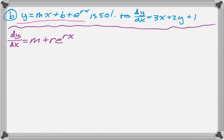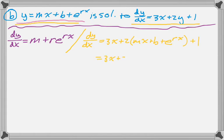So the derivative of mx is m, the derivative of b is 0, and then r e to the rx. The next thing I'm going to do is take that y and substitute it into the dy dx that I was given. So now I get 3x plus 2 times this y value, and then plus 1. Clean this up a bit.